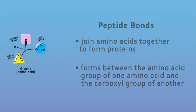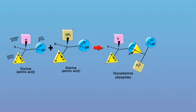In this example, the acid group of glycine joins with the amino group of alanine. The result is glycylalanine.